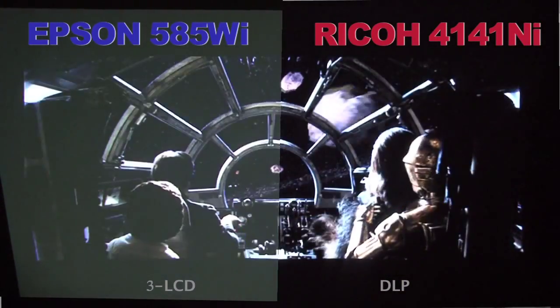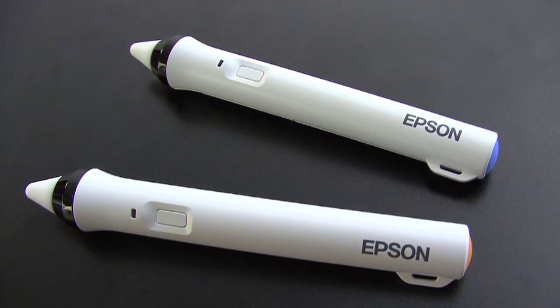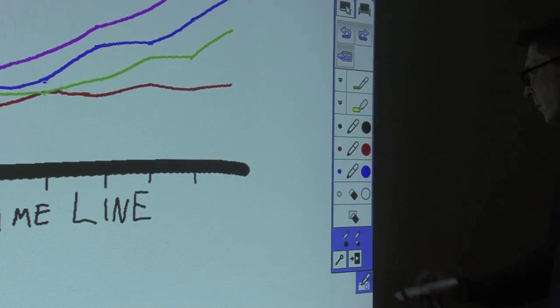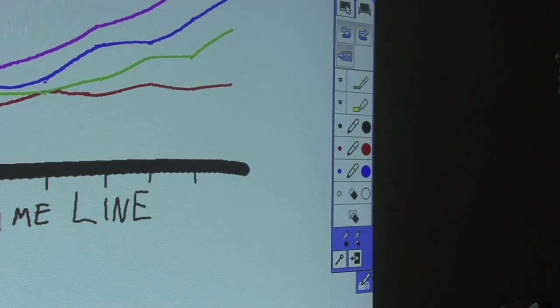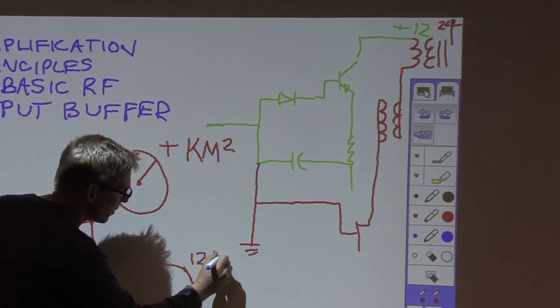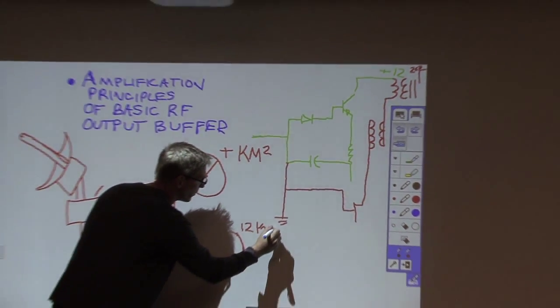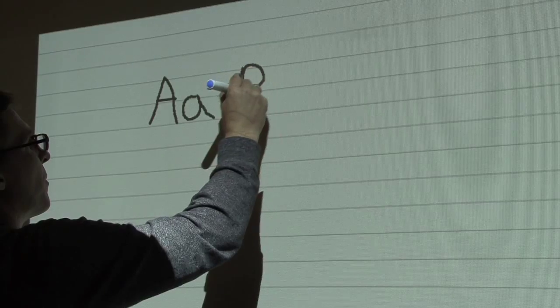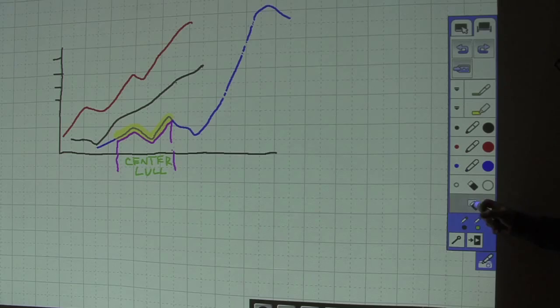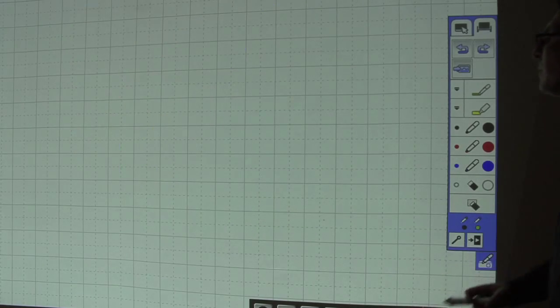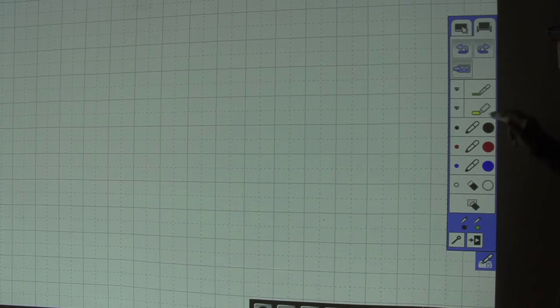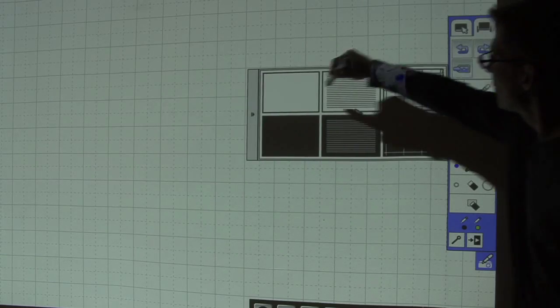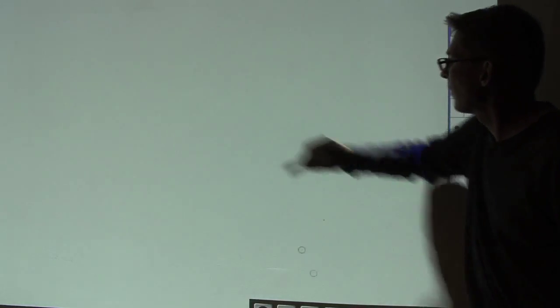The Epson 585Wi includes two interactive pens that allow you to annotate over any image projected onto a solid surface with or without a PC connected. This allows the Epson 585Wi to be used as a virtual whiteboard or blackboard with some basic built-in drawing tools. The user can now annotate on one of several backgrounds provided or over any image or video input.